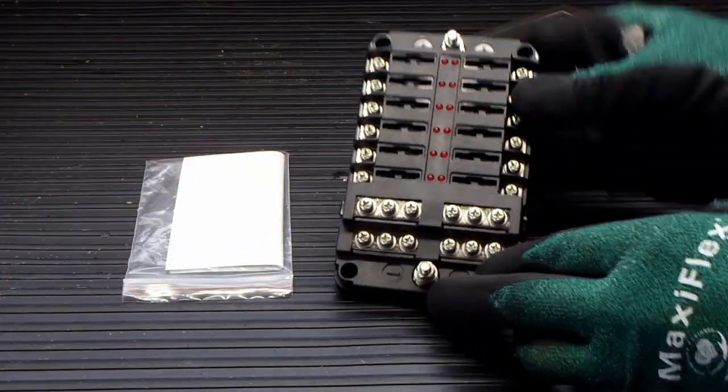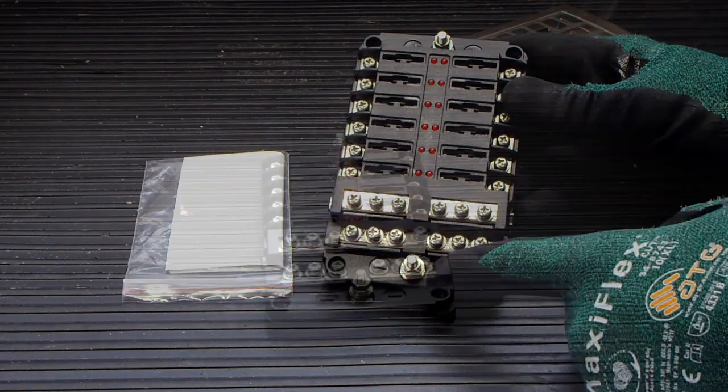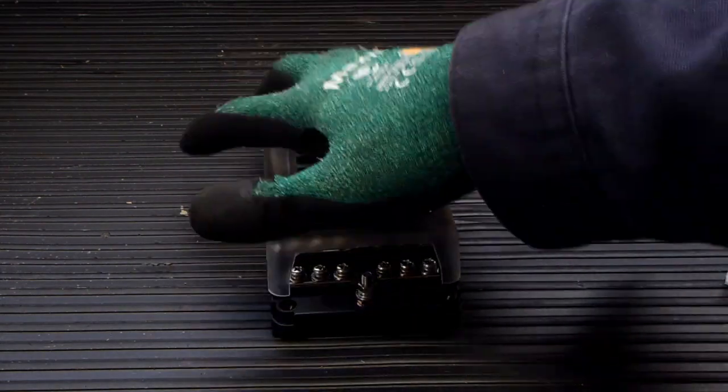The third component is a terminal block. This unit has a good amount of outputs with easy to use ground and power terminals, and of course, a cover.